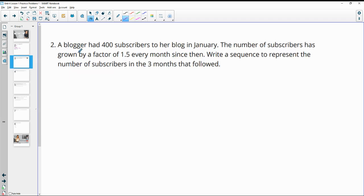Number two: a blogger has 400 subscribers to her blog in January. The number of subscribers has grown by a factor of 1.5 every month. Write a sequence to represent the number of subscribers in the three months that followed.